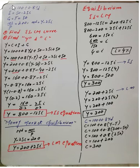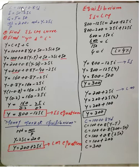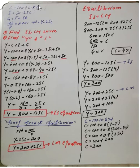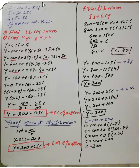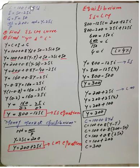We have the following values: C equals 100 plus 0.8 YD. Here 100 is autonomous consumption — what we must spend whether our income is zero or not. This is the autonomous part of consumption, and 0.8 is the MPC, which changes with income. It is a positive relationship: when disposable income increases, consumption also increases. The change in consumption due to change in income is 0.8.